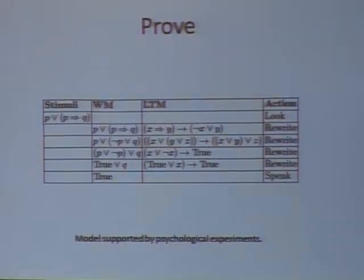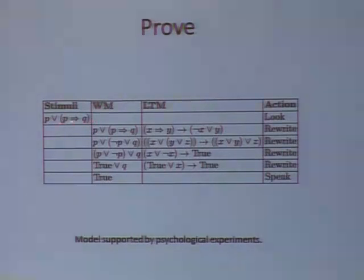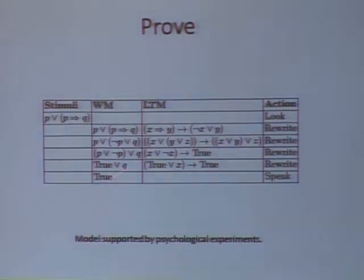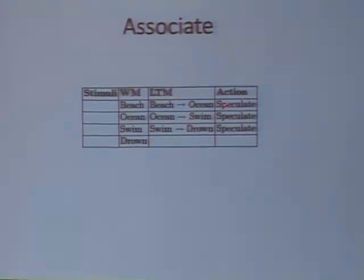We can also do logic. It's a goal-driven system, inspired by natural deduction, using rewrite rules. We rewrite the implication in the familiar way and continue until we obtain 'true' — which means this is actually a tautology. We can also do associations: if we think of a beach, we may start thinking of an ocean; from the ocean we may go on to swim; for swim, we may think of drown. These are more like associative trains of thought.